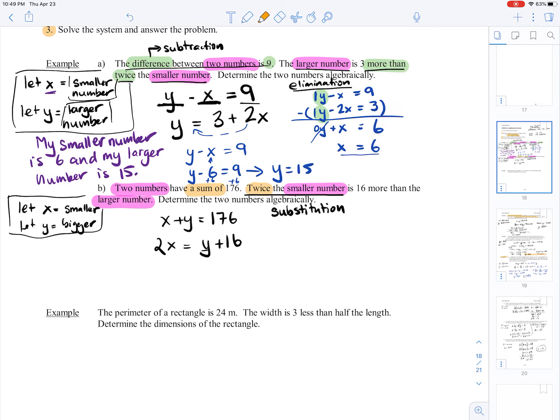I think it would be easiest for me just to take this equation and turn it into x equals 176 minus y. Now, just like the name says, I'm going to substitute in 176 minus y for x into our other equation. So this becomes 2 times (176 minus y) equals y plus 16.